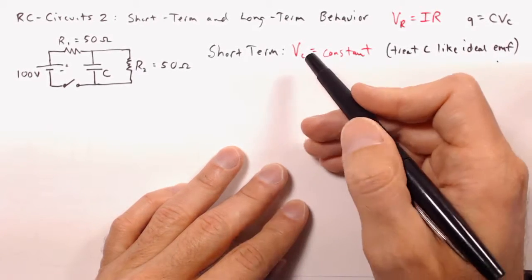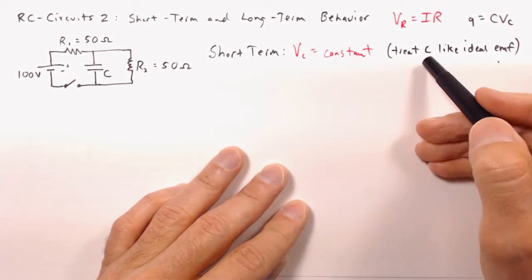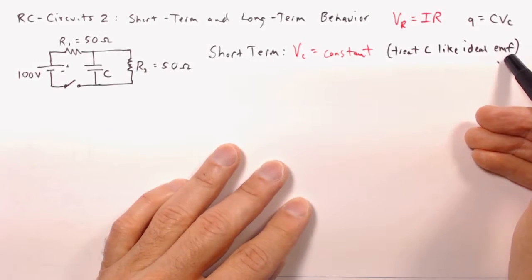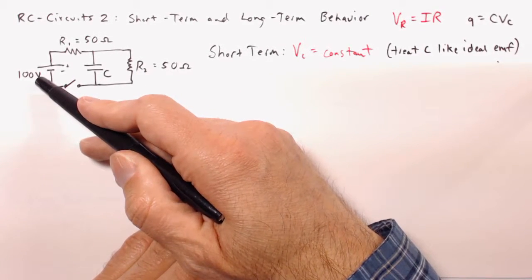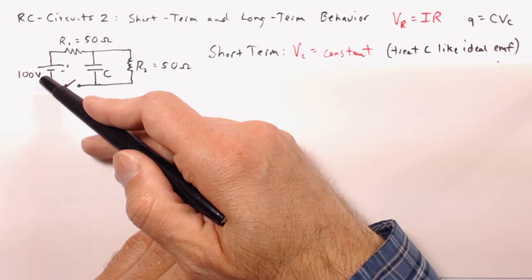And what that means is that we can treat the capacitor as if it were an ideal electromotive force. So we treat it just like this voltage source over here. It's got a constant voltage and zero internal resistance.